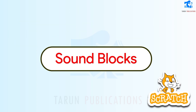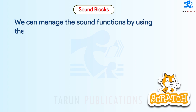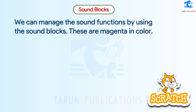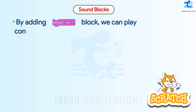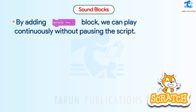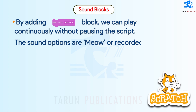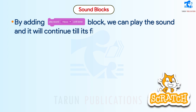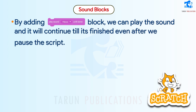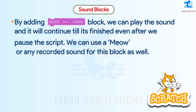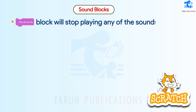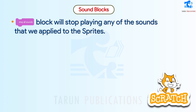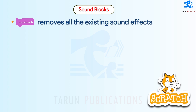Sound blocks are used to manage the sound functions. These are magenta in color. By adding one block, we can play the sound continuously without pausing the script; the sound options are meow or recorded sound. Another block plays the sound and continues till it's finished, even after we pause the script. A block will stop playing any sounds applied to the sprites, and another removes all existing sound effects from the sprite.